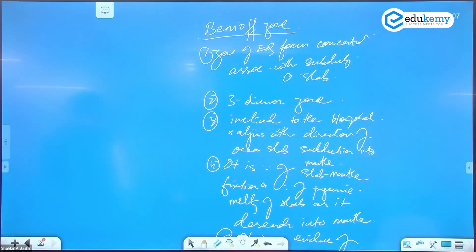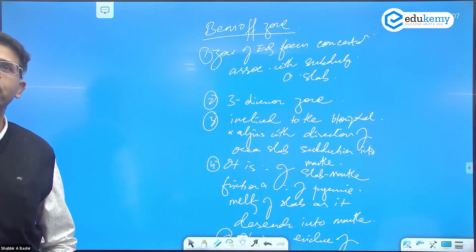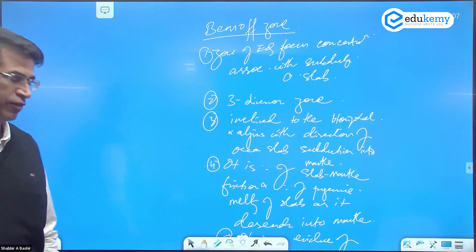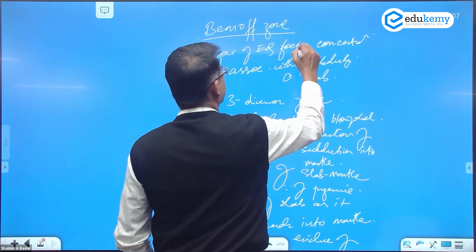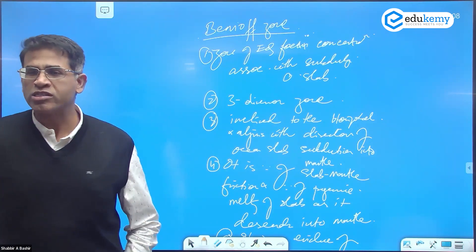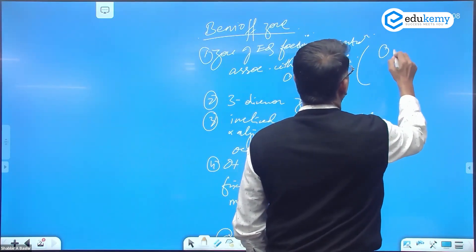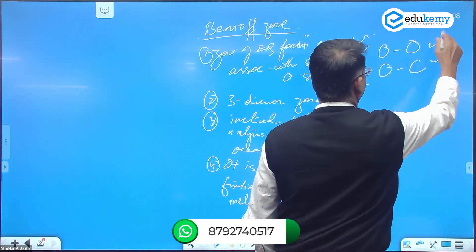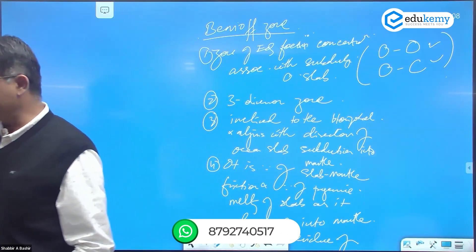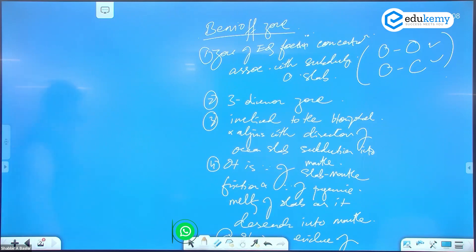Now repeating these statements — what is the Benioff zone? The first point: the Benioff zone is an earthquake zone. It's a zone of earthquake foci concentration associated with a subducting ocean slab. When we say subducting ocean slab, we mean OC boundaries — wherever there is an ocean slab that is subducting — it is a zone of earthquake foci concentration associated with subducting ocean slabs.